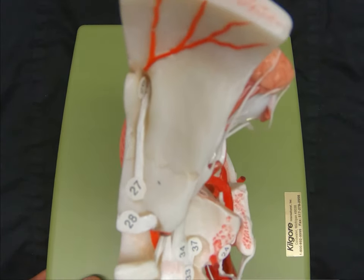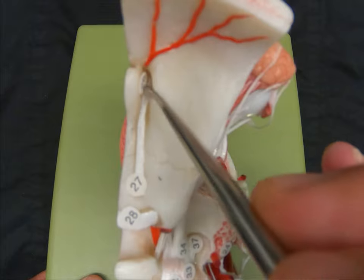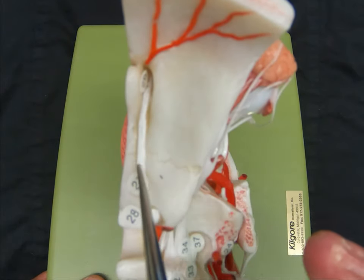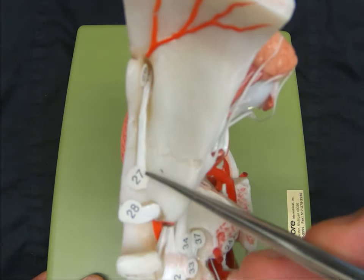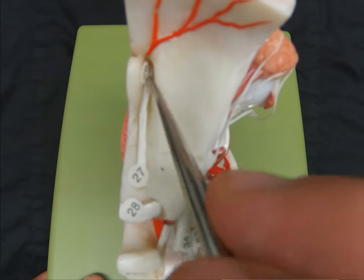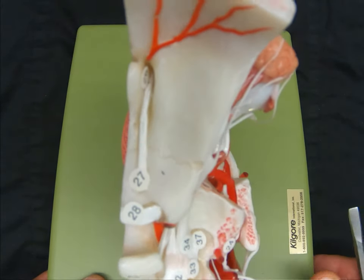The first cranial nerve that we will look at is cranial nerve 1, which we can see on this plastic model as it would exit off of the brain and rest on the cribriform plate.